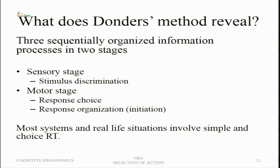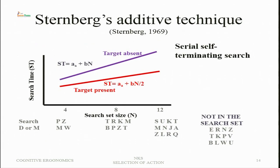Donders' method reveals three sequentially organized information processes in two stages: a sensory stage, involving stimulus discrimination, and a motor stage, involving response choice and response initiation. In most real-life systems, simple and choice reaction time will be involved; complex reaction time situations are less common but important to understand — here only one response is given regardless of the stimulus value.